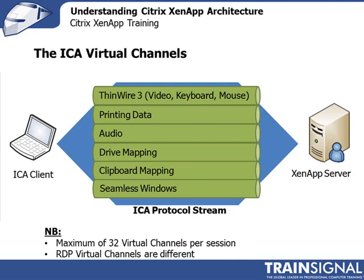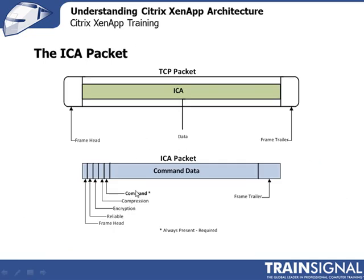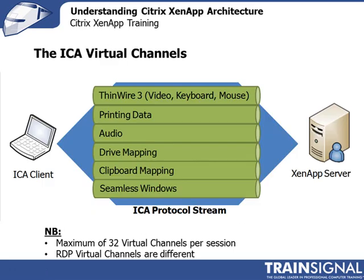The ICA protocol encapsulates data into virtual channels. Instead of sending a separate packet for audio, another for video, another for printing — which is inefficient — the ICA protocol creates virtual channels within the ICA packet, encapsulates the different types of data, and sends them in one packet. Within the command data you'll have all the different virtual channels encapsulated, all put inside a TCP packet and sent across the wire — a more efficient way of transmitting data.